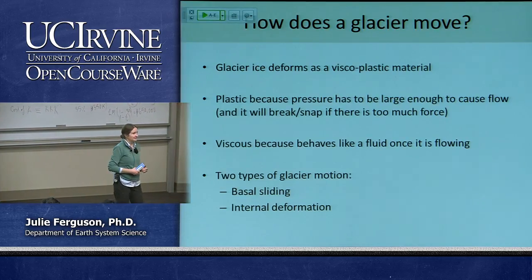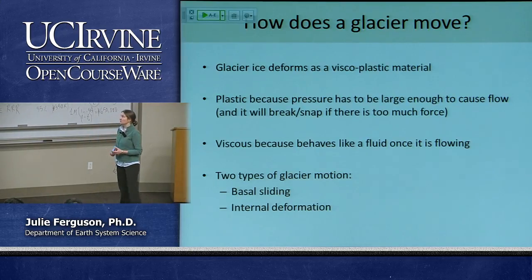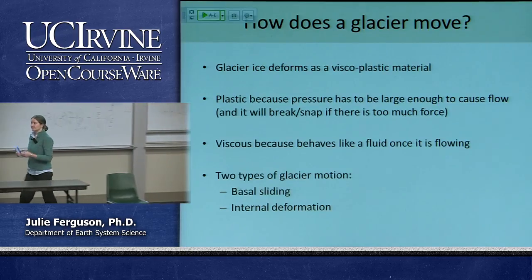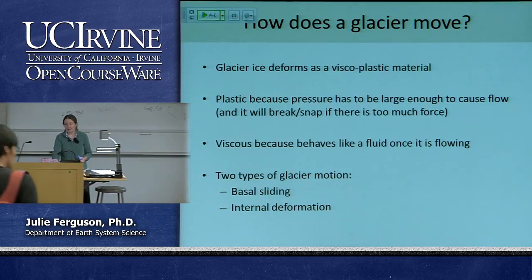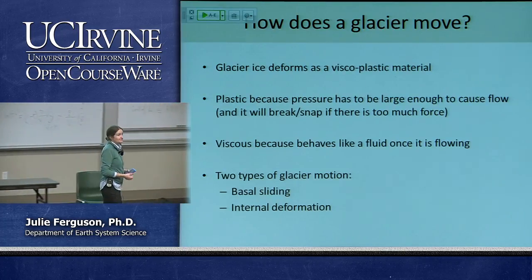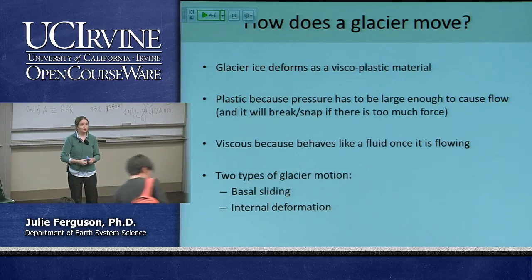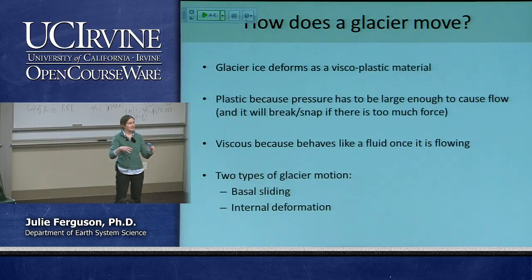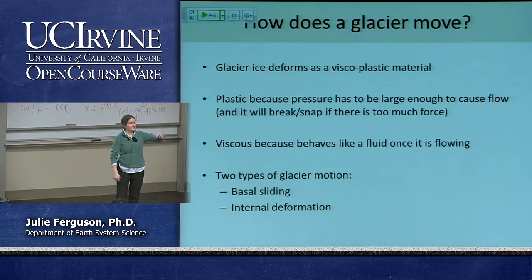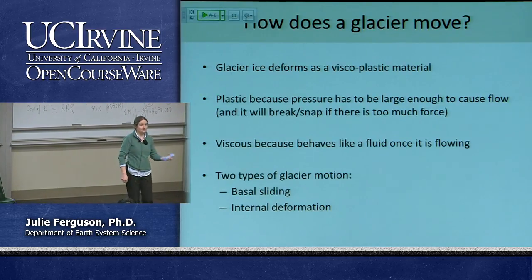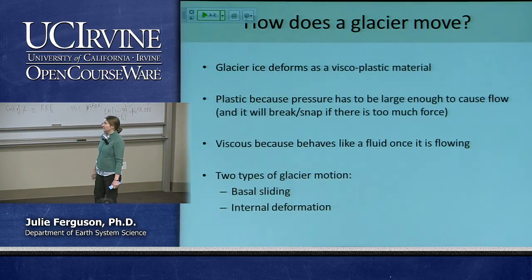Let's think again about how our glacier works and how it flows. Glacier ice deforms as a viscoplastic material. It's plastic because we have to exert a certain amount of force before it moves, and if we exert too much force it will break and snap. It's viscous because once it is moving, once we've exerted enough force, it will behave like a fluid and flow. We have two types of glacier motion: basal sliding, where the whole glacier slides along, and internal deformation, where individual ice crystals slide past each other.